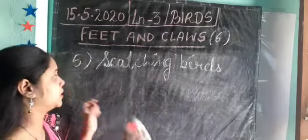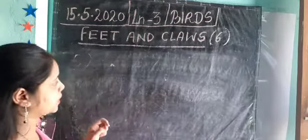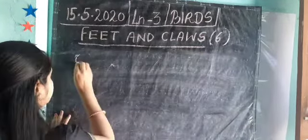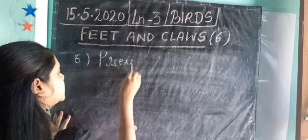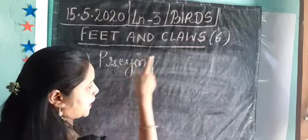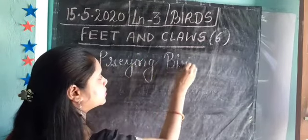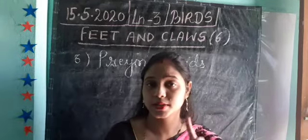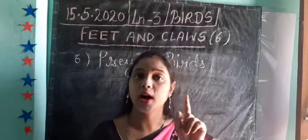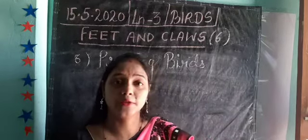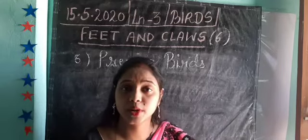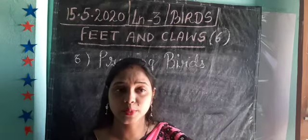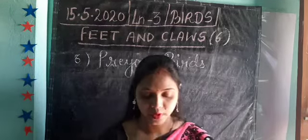The last and sixth type is the bird of prey, also called the flesh-eating bird. In the last session we also saw that birds of prey have hard, sharp, hooked beaks. These are flesh-eating birds — they eat the flesh of other animals.